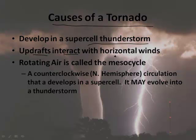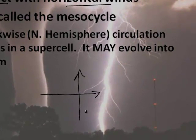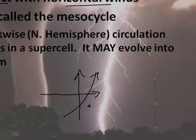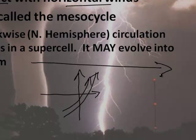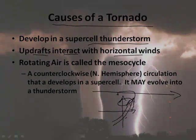Then you have these updrafts — they interact with horizontal winds. You've got an updraft, which is a draft going up, and horizontal winds going sideways. So we have winds going in opposite directions. When I say updrafts, it's usually not straight up because it's at an angle, since a storm is moving in a particular direction because of the winds. And this can cause the wind to begin to rotate.